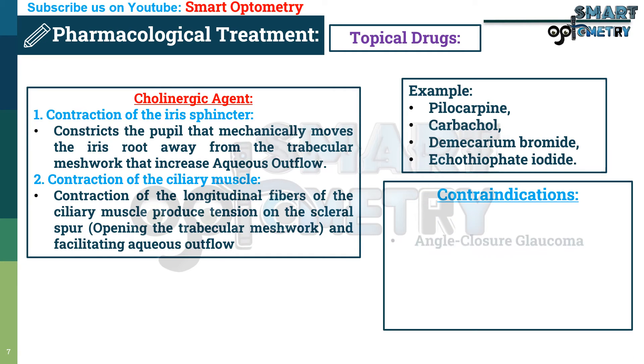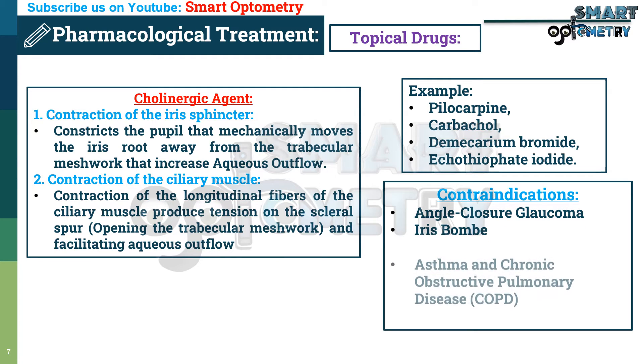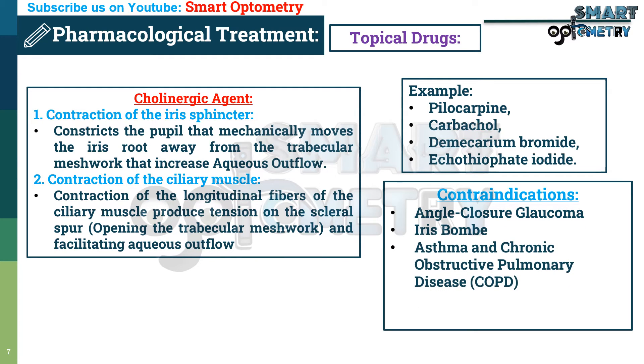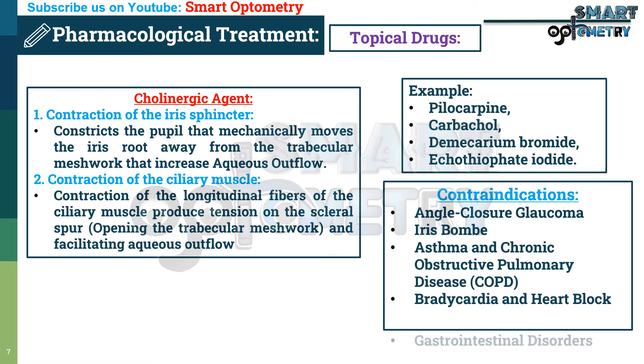Contraindications of cholinergic agents include angle closure glaucoma, iris bombe, asthma and chronic obstructive pulmonary disease, bradycardia and heart block, and gastrointestinal disorders.